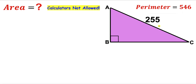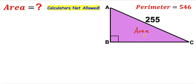Welcome to PreMath. In this video we have a right triangle ABC such that its hypotenuse AC is 255 units, and moreover the perimeter of this triangle is 546 units. Our task is to calculate the area of this given triangle, and we are not supposed to be using calculators of any kind.